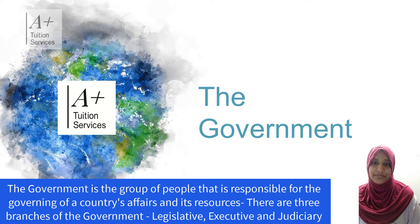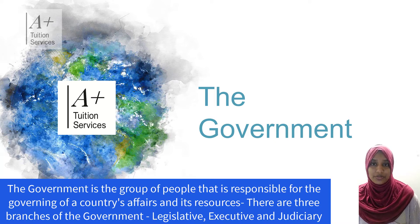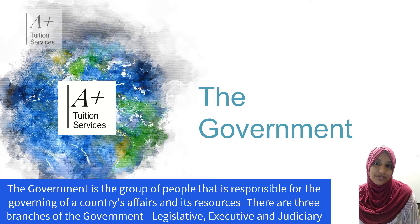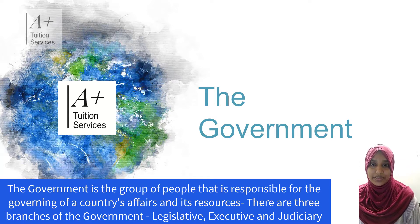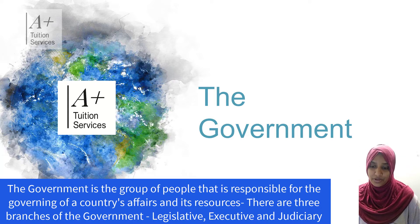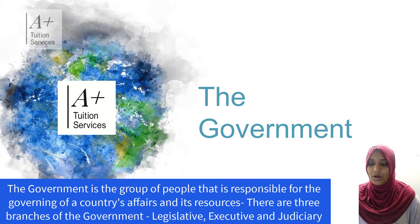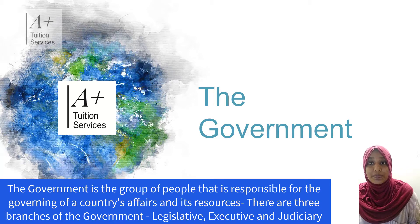We have the judicial branch, which involves the courts, and we have the executive branch, which consists of cabinet. Throughout this entire lecture we're going to look at the functions of the government, the different arms or branches of the government, and we are going to look at how a law is passed from a bill.